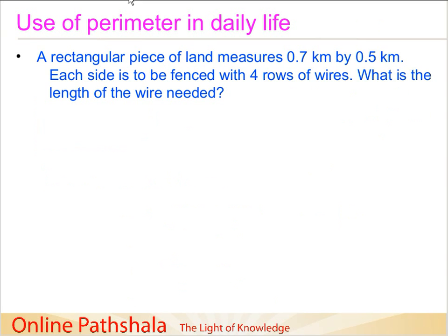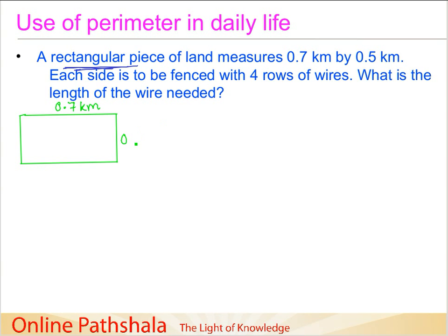Let us look at one more example. A rectangular piece of land measures 0.7 km by 0.5 km. Each side is to be fenced with 4 rows of wire. What is the length of wire needed? We quickly draw our rectangle representing the piece of land, and label the longer side as 0.7 km and the shorter side as 0.5 km. We have decimals, so we simplify by converting to meters. Recall that 1 km equals 1000 meters.